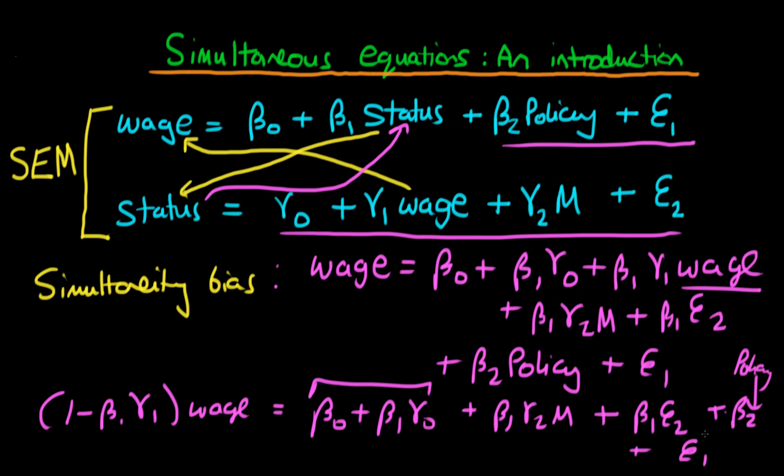So we've done a lot of rearranging of stuff. And why have we done it? Well, the reason we've done this is because if I was to then divide through by this expression on the left-hand side, we would just have an expression for wage on its own. And what is contained within that expression? Well, importantly, wage contains this error term epsilon 2 here. So in other words, wage is in some way correlated with error term epsilon 2.